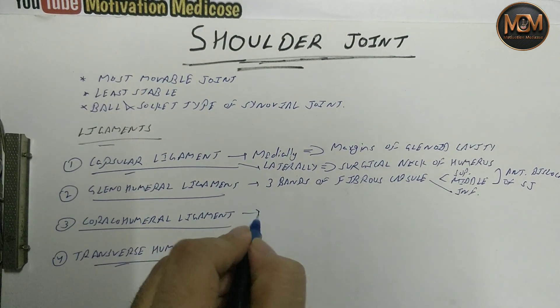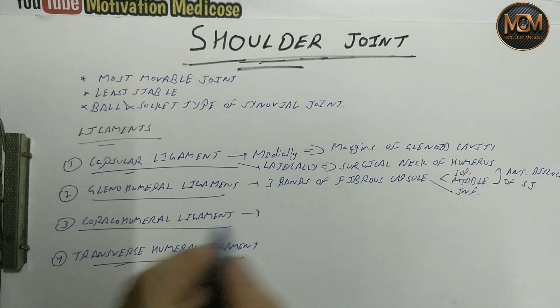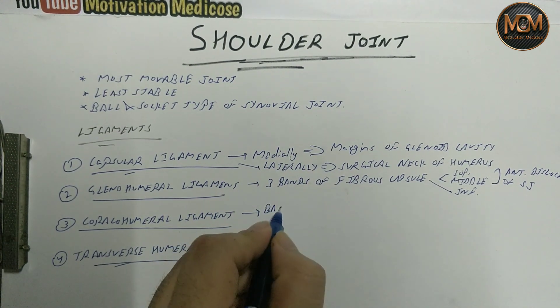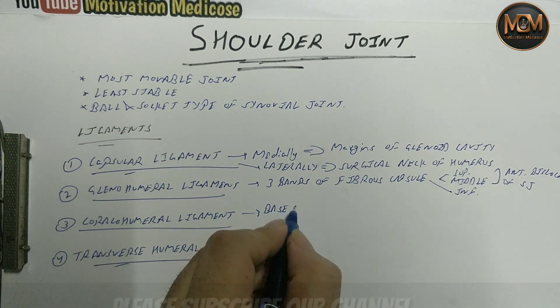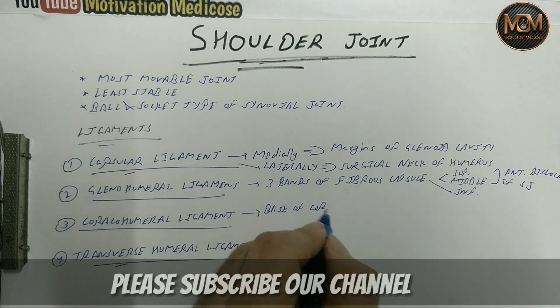So the coracohumeral ligament runs from the base of the coracoid process to the greater tubercle of the humerus.